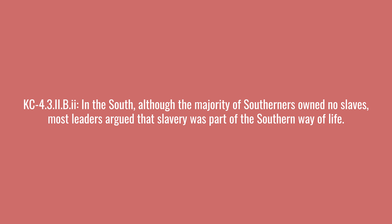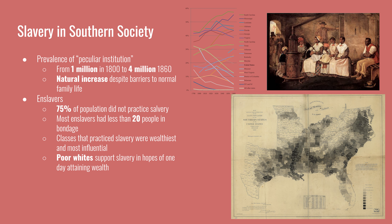The next key concept says that in the South, although the majority of Southerners owned no slaves, most leaders argued that slavery was part of the Southern way of life. In the South, they called slavery the 'peculiar institution' — a euphemism that tried to hide the evils of slavery. From the year 1800 to 1860, the year before the start of the Civil War, the enslaved population quadrupled from 1 million to 4 million.